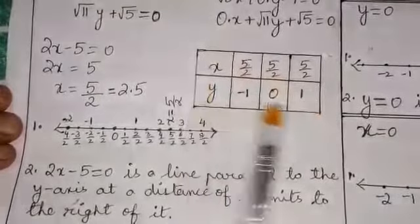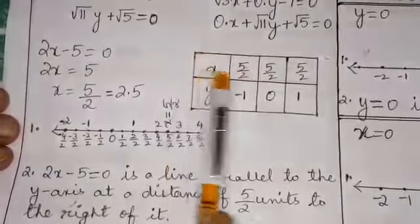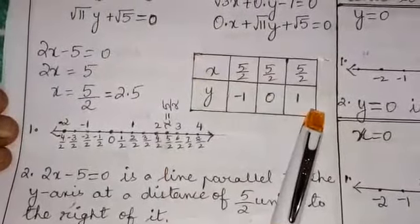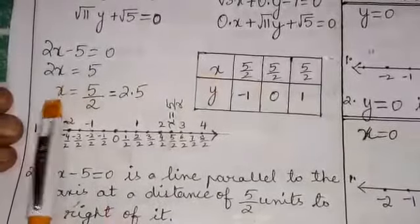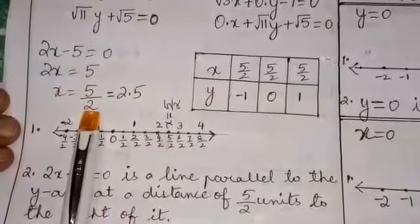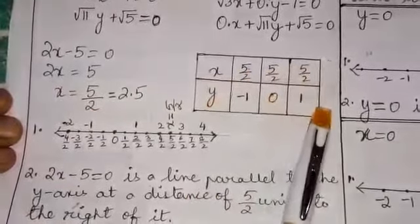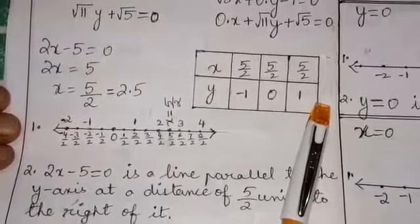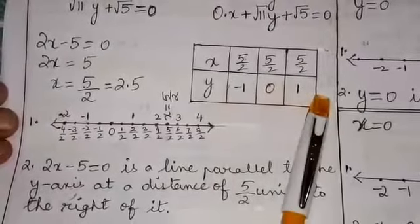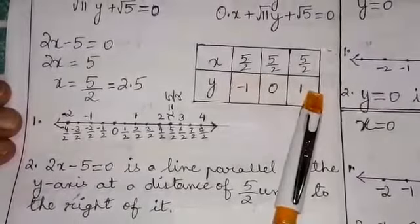I repeat, to prepare this table showing the x and y values, since x is 5 by 2, it means x is always 5 by 2 irrespective of the values of y. So against y, we could take any value.